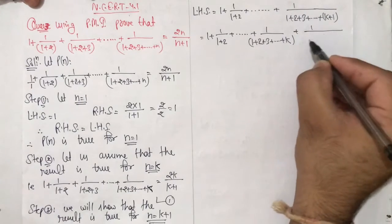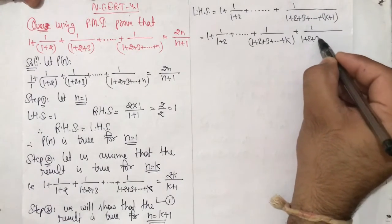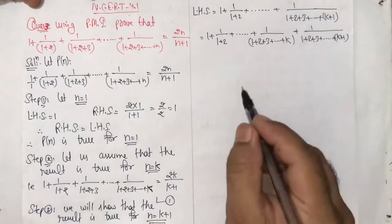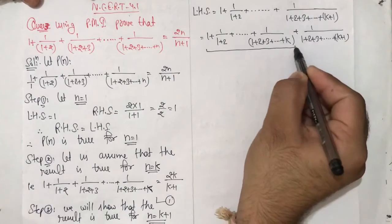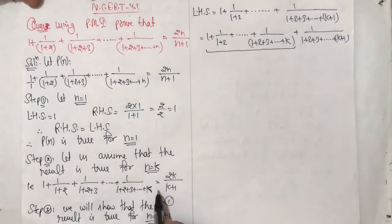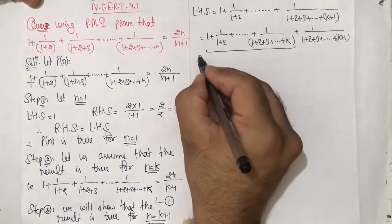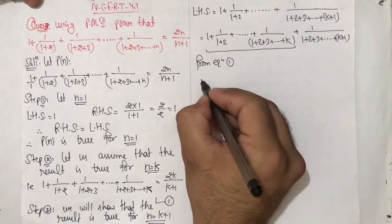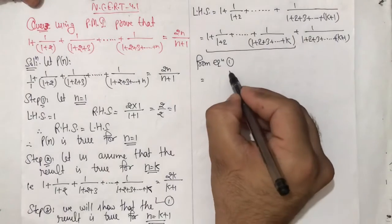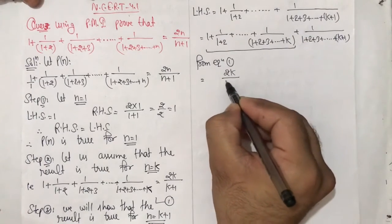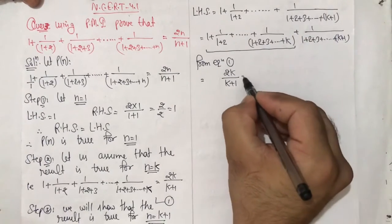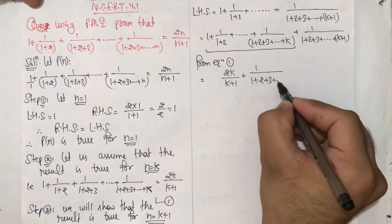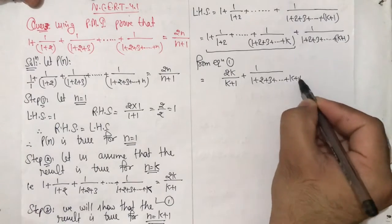Plus 1 upon (1 plus 2 plus 3 and so on up to k plus 1). The sum of the first part, from equation 1, equals 2k upon (k plus 1), plus 1 upon (1 plus 2 plus 3 and so on up to k plus 1).